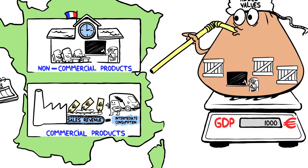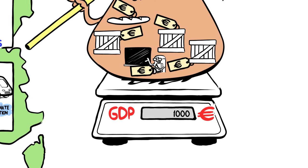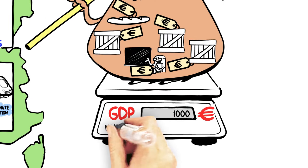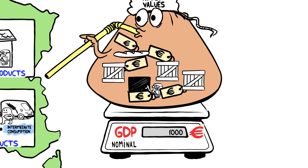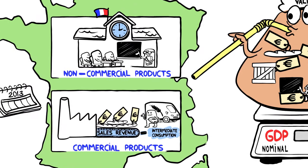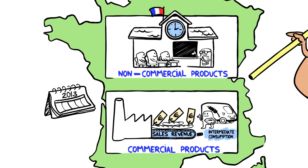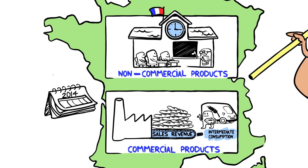The concept of price is therefore found through the added values used to calculate GDP. This is called nominal GDP. However, if prices increase year on year, GDP will also increase while the quantity produced will not have increased. To compare a country's level of wealth from year to year, we therefore need to remove the variation in price, in order to find out only the variation in quantity produced.